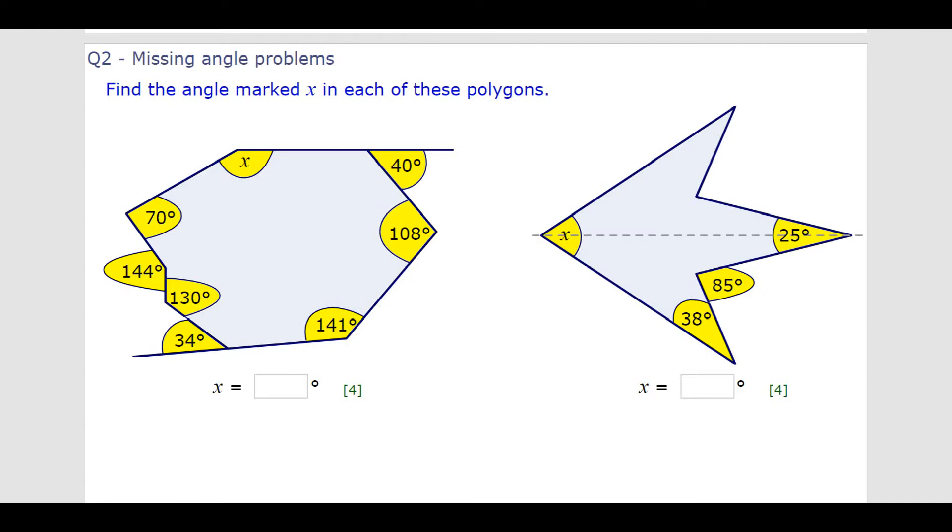So, basically, well, before I do that, we need two angle facts to solve these problems. One, angles on a straight line are supplementary. Or angles on a straight line add up to 180 degrees.